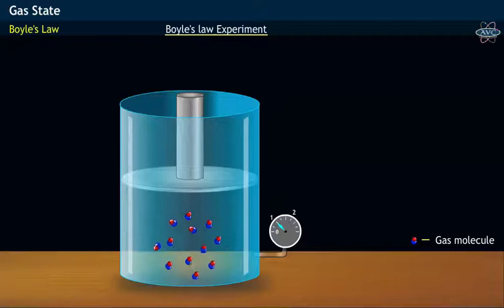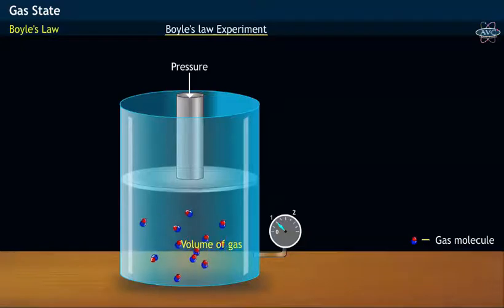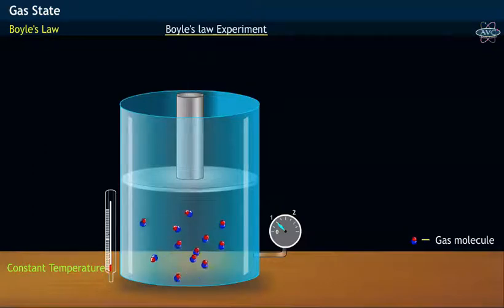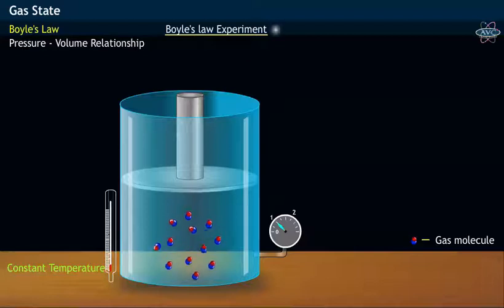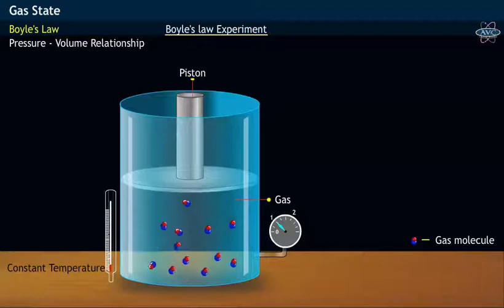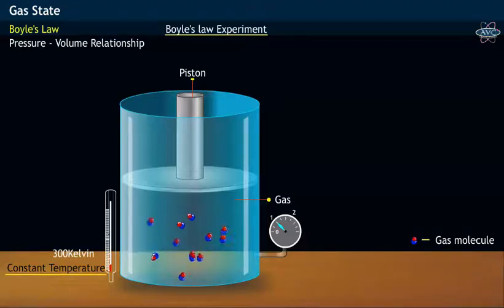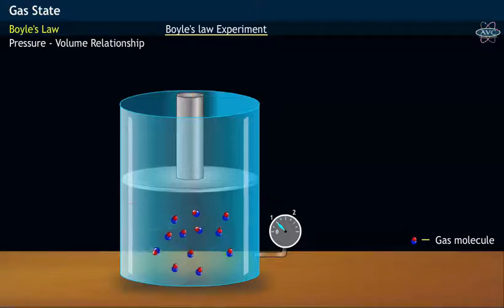Robert Boyle in his experiments studied the relationship between pressure and volume of gas placed in a container and maintained at constant temperature. In order to understand the pressure-volume relationship, an experiment was conducted by placing a gas in a container arranged with a piston. Here the apparatus is maintained at constant temperature, that is 300 Kelvin.